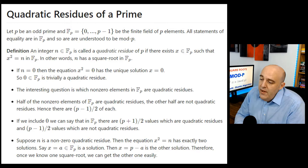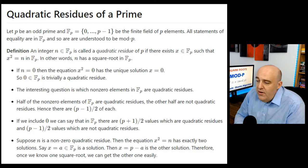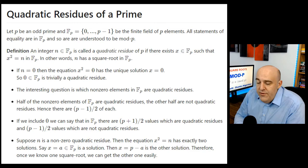When n equals 0, we get x squared equals 0, which obviously has a solution x equals 0, and that is in fact the only solution. So by our definition, 0 is a quadratic residue. It's kind of trivial, so it's not as interesting as thinking about the non-zero elements of fp which are quadratic residues or not.